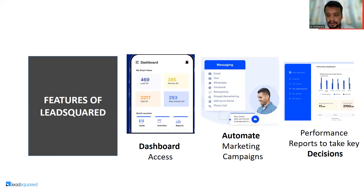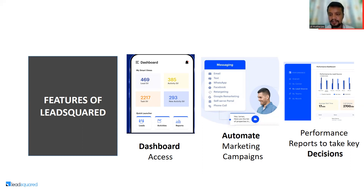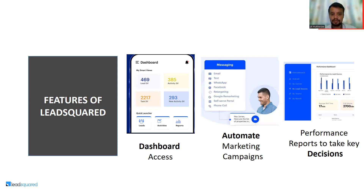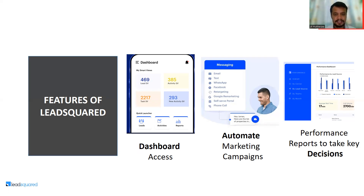The third feature is performance reports to support key decisions. Whatever marketing campaigns you run, performance reports are critical at end of month when every business has targets across sales, marketing, and tech. For example, out of 469 leads, 385 are performing well — so only those 385 are targeted. If you spent 5000 on marketing and got 2000 back with a customer acquisition cost of 100 per consumer, you can decide to continue Facebook marketing but cut expensive WhatsApp or retargeting campaigns.